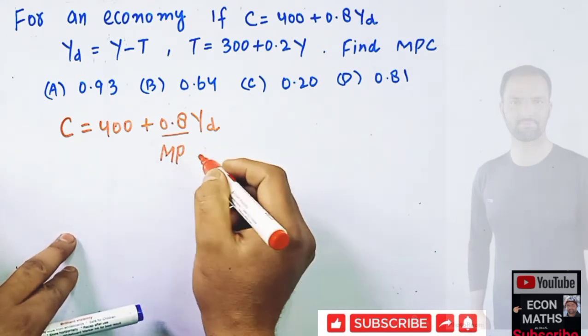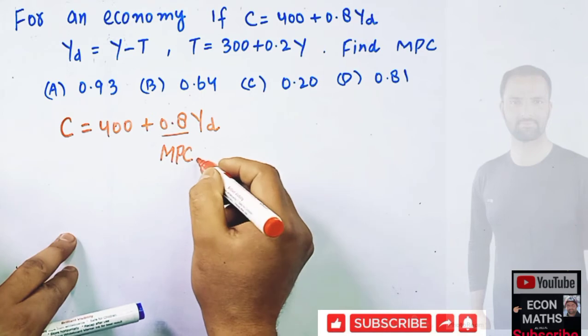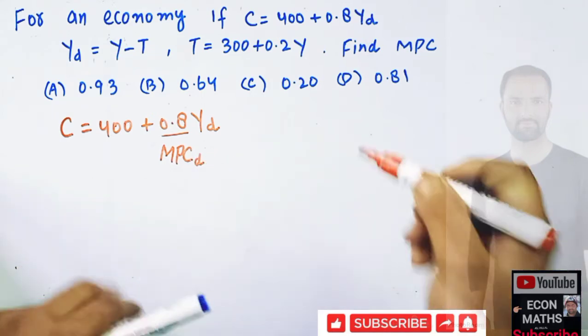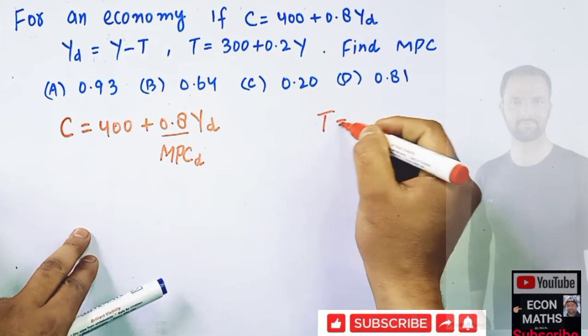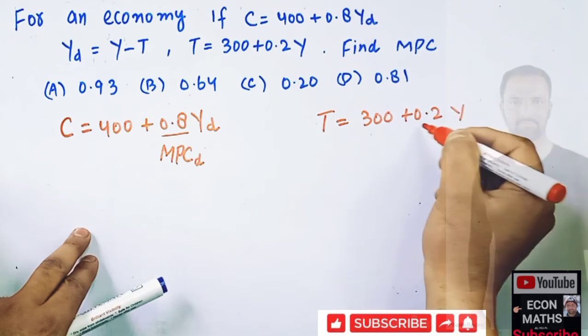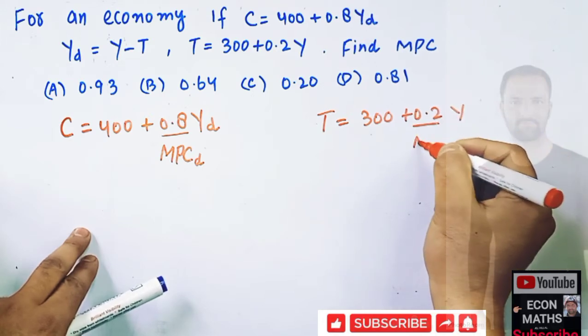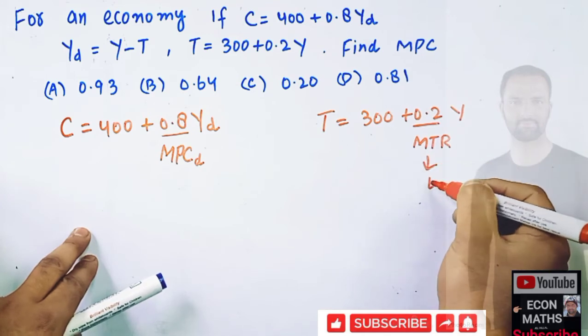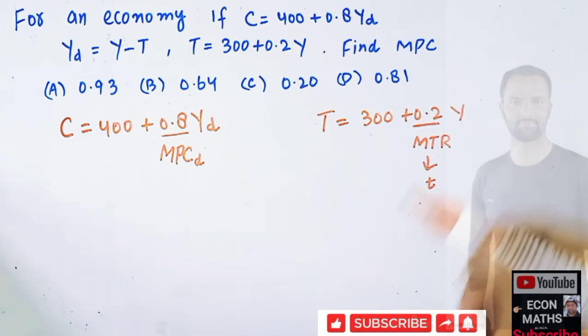Also we are being given T equals 300 plus 0.2 Y. This is our marginal tax rate.